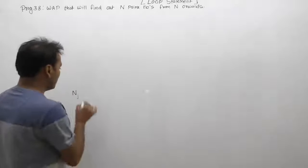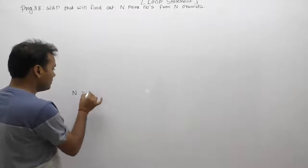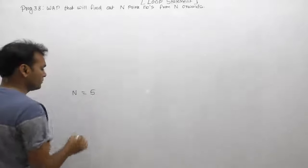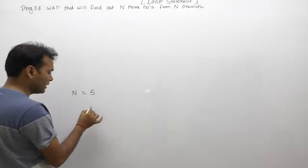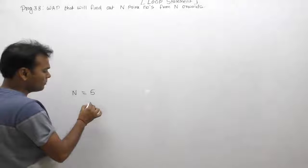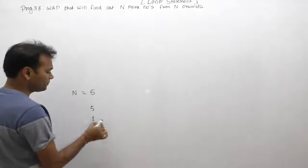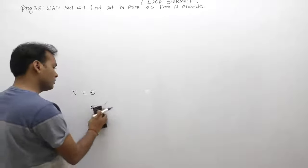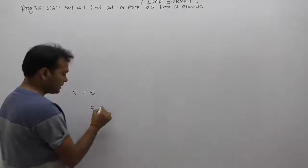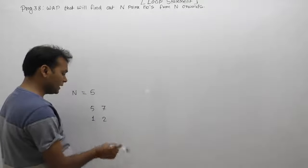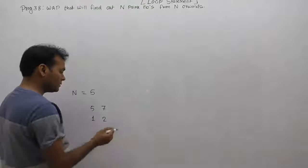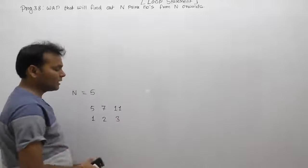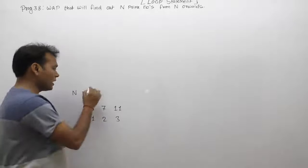What is meant by N onwards? For example, if the entered value of N is 5, then prime number searching starts from N onwards, meaning from 5 onwards. 5 itself is a prime number, so it counts as 1. Next, check 6 — 6 is not a prime number, so remove it. Next, 7 is a prime number, count as the 2nd. Then 8, 9, 10 — skip. 11 is again a prime number, total prime count becomes 3, counting from 5 onwards.